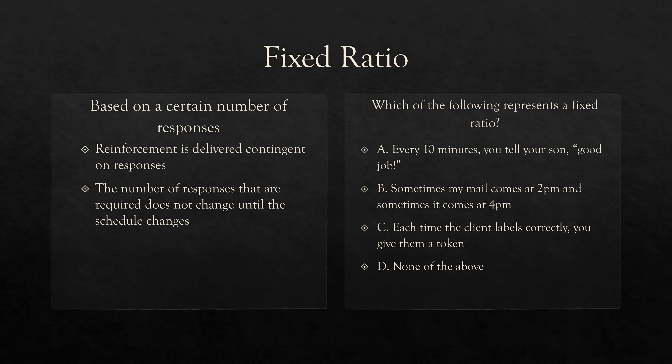If you're running a fixed ratio schedule and that schedule never changes for five years, then for five years we're running a schedule contingent on four responses. Responses and schedules should change, but the point is: fixed ratios don't change. Any sort of fixed ratio schedule is exactly that — fixed.